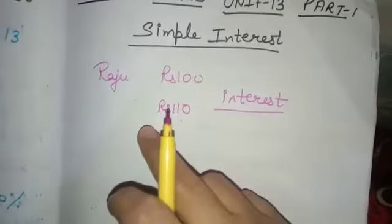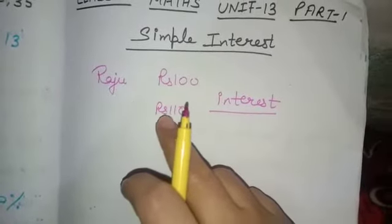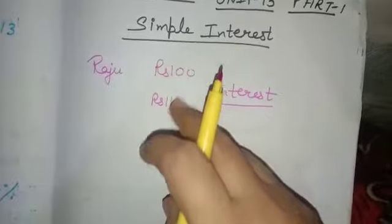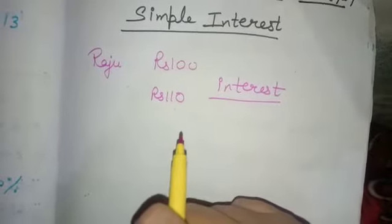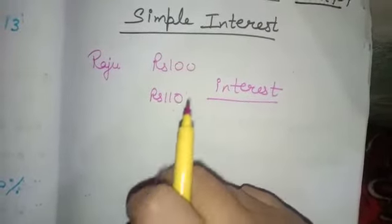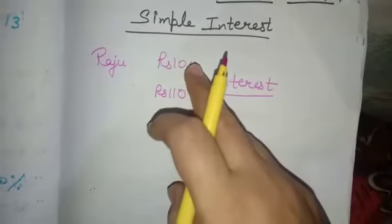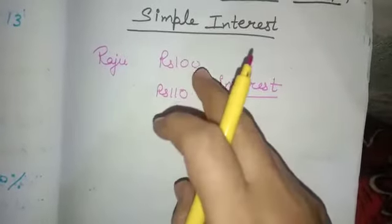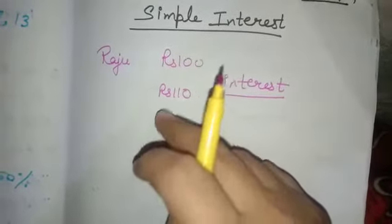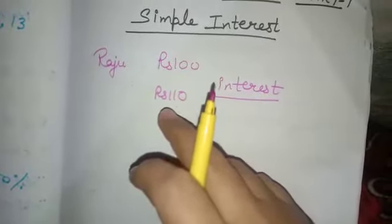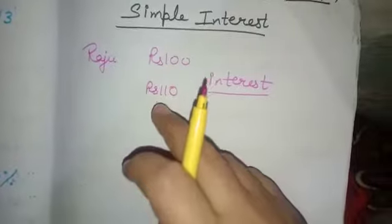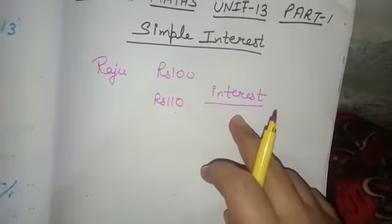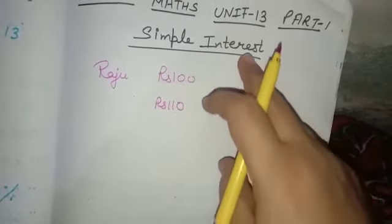Raju said, 'Oh, thank you! But how did my 100 rupees become rupees 110?' The manager said that when someone deposits some money in a bank, the bank pays some extra money to him called interest. This is our today's topic — interest.